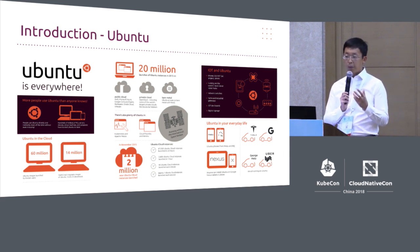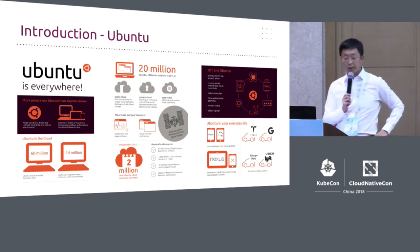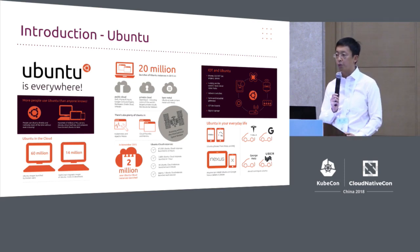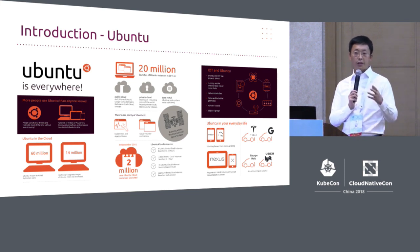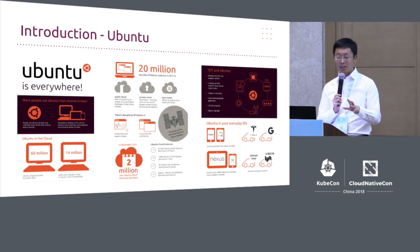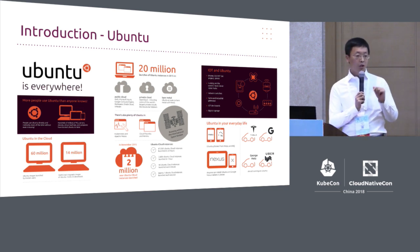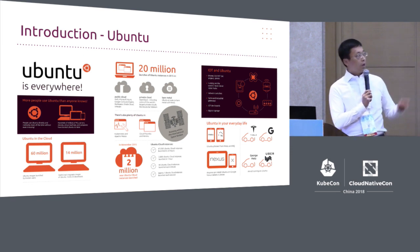Ubuntu is also the default image on the public cloud, with over 220 million instances of Ubuntu operating on the public cloud. In addition to Docker and public cloud, on PaaS platforms including Kubernetes, Apache Mesos, and Cloud Foundry, a lot of Ubuntu instances are also being used by default. In November 2015 alone, on the public cloud, there were 2 million new Ubuntu instances — that's 168,000 a day, meaning every second there is one new Ubuntu instance being activated.